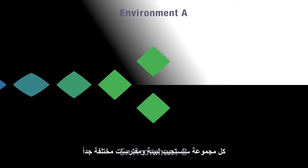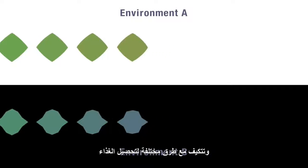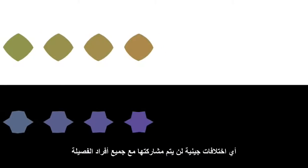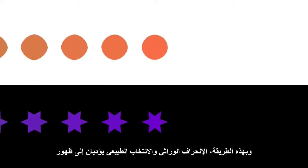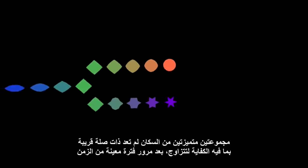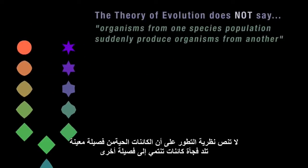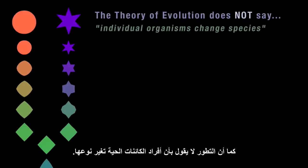If members of a given species become geographically isolated from each other, each group may end up responding to very different environments, predators, and ways of gathering food. Any genetic variations will no longer be shared throughout the whole population but only within each group. In this way, genetic drift and natural selection can lead to the emergence of two distinct populations which, after a given period of time, are no longer related closely enough to interbreed. The theory of evolution doesn't say that organisms from one species suddenly produce organisms from another — dogs don't produce cats, nor do individual organisms change species.